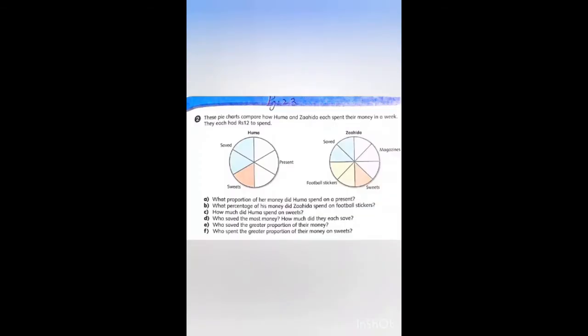In this exercise we have 2 pie charts. There are 2 pie charts, 1 for Huma and 2nd for Zahida. Huma's pie chart is divided into 6 equal parts: 2 for saved, 1 for sweets, 3 for presents.